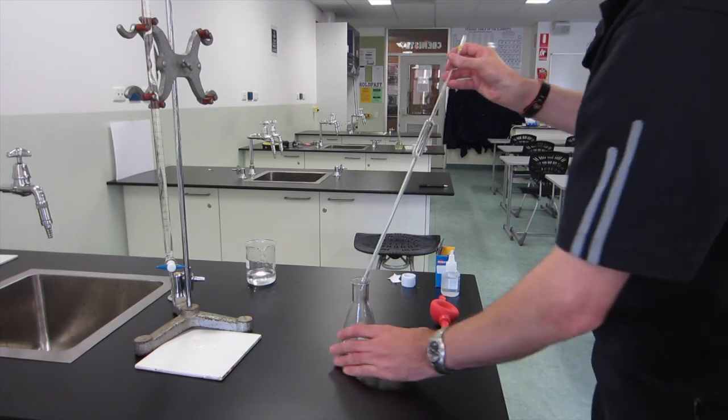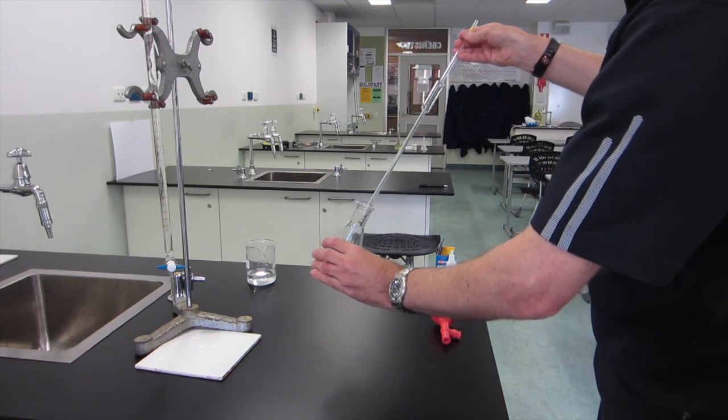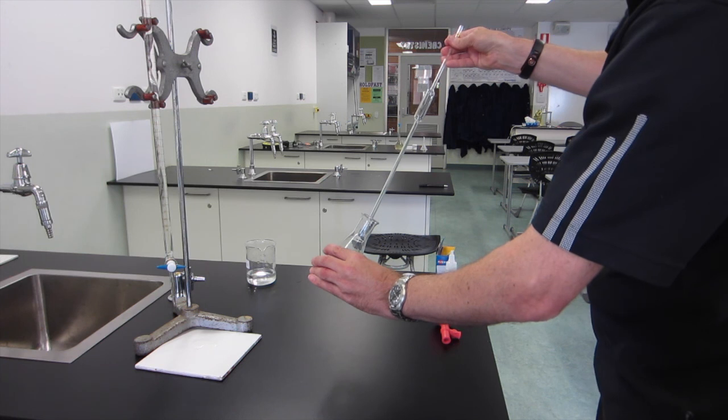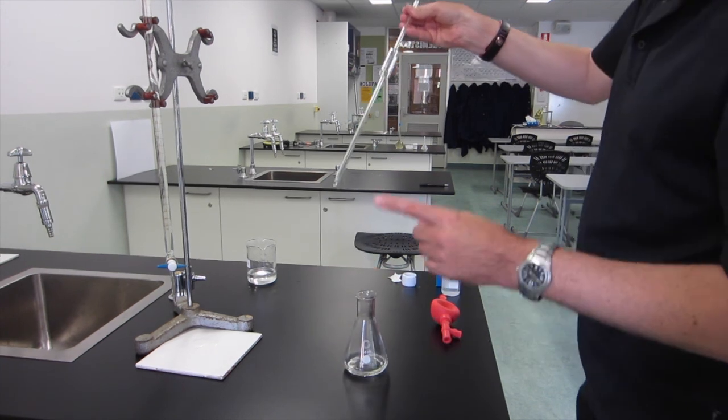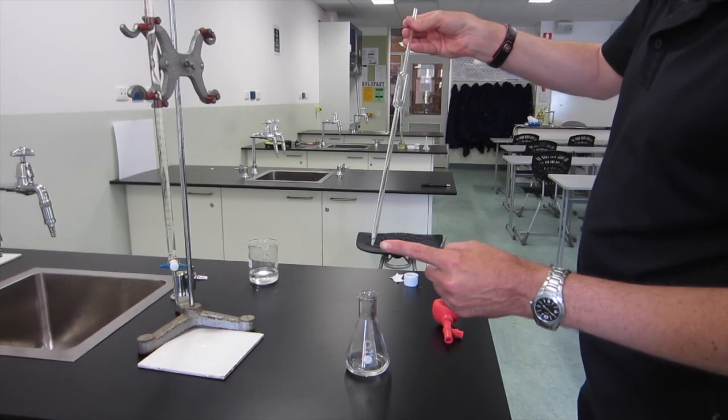As it drains out, it will get down to the bottom. Gently tap it to the side of the conical flask to remove any last drops on the end. There should be one drop remaining in the bottom of the pipette, leave that there.